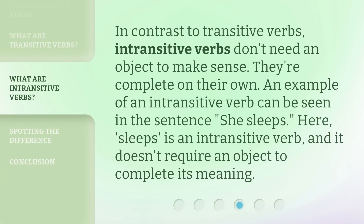In contrast to transitive verbs, intransitive verbs don't need an object to make sense. They're complete on their own. An example of an intransitive verb can be seen in the sentence 'she sleeps.' Here, 'sleeps' is an intransitive verb, and it doesn't require an object to complete its meaning.